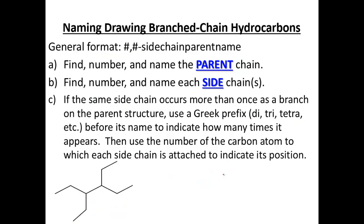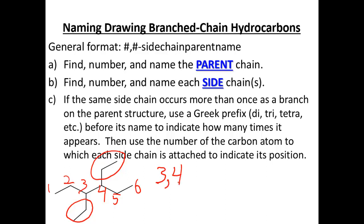For the next structure, we find the parent chain — the longest carbon chain going straight across: one, two, three, four, five, six. No matter which way you count, you get the same six-carbon chain, so we have hexane. We have an ethyl group and another ethyl group at the three and four spots. Since we have two of them, it's diethyl, and the six-carbon chain is hexane. So 3,4-diethylhexane — no space between them, all one word.